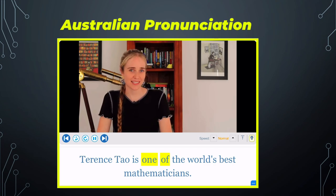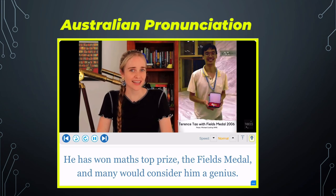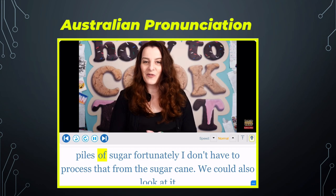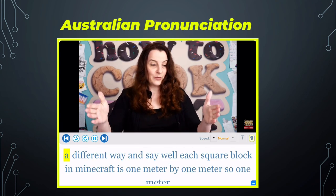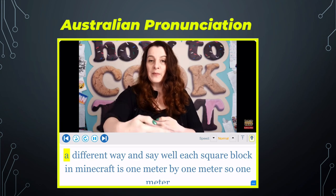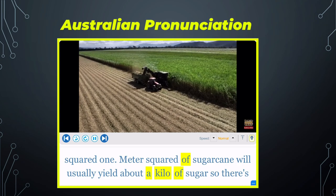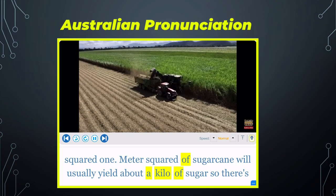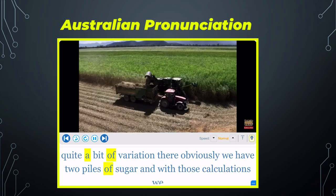Terence Tao is one of the world's best mathematicians — he has won math's top prize, the Fields Medal, and many would consider him a genius. We don't have to process that from the sugar cane. We could also look at it a different way and say each square block in Minecraft is one meter by one meter, so one meter squared of sugar cane will usually yield about a kilo of sugar.